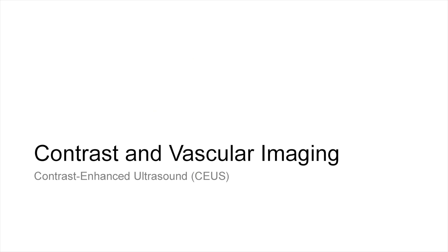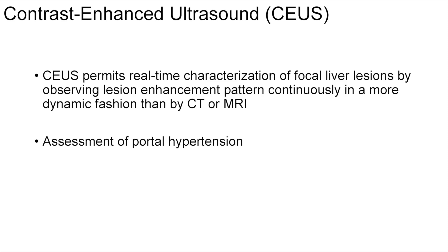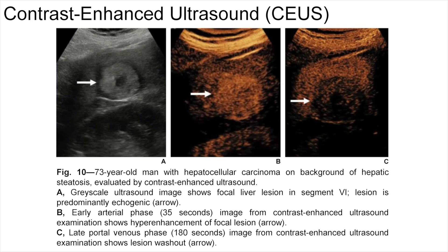Contrast vascular imaging can be performed with contrast-enhanced ultrasound, or CEUS. This technique permits real-time characterization of focal liver lesions by observing lesion enhancement pattern continuously in a more dynamic fashion than by CT or MRI. It can also be used to assess portal hypertension. In this example, a 63-year-old man with hepatocellular carcinoma is seen on the background of hepatic steatosis as evaluated by CEUS. The grayscale image shows a focal liver lesion in segment 6, which is predominantly echogenic. The arterial early phase image shows hyperenhancement of this mass, and the portal venous phase shows lesion washout.